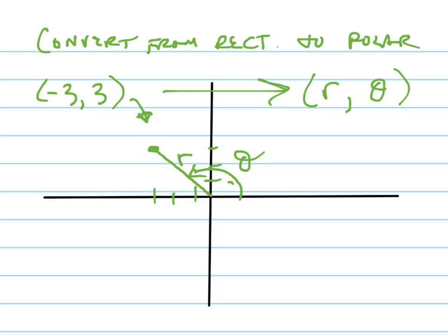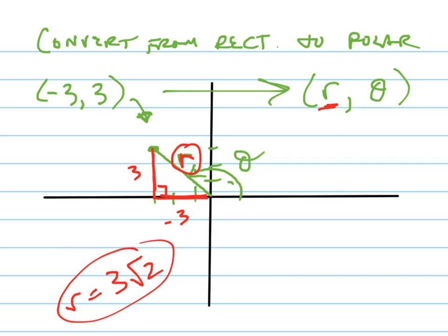So how do we do that? Well, r is pretty easy to find. I'll do r in red. To find r, I need to take this triangle right here, which is up 3, left 3, and I need to find r. Well, that's a 45, 45, 90. If you remember your special right triangle rules, it's just 3 root 2. r equals 3 root 2. That's all it is.